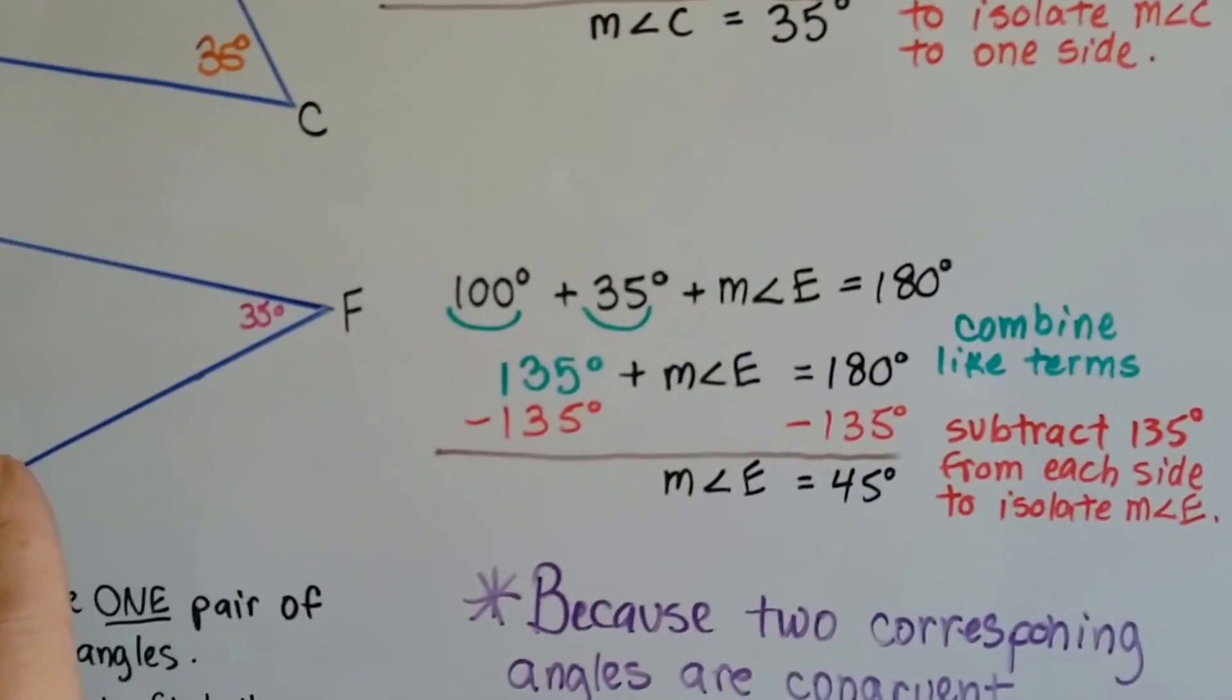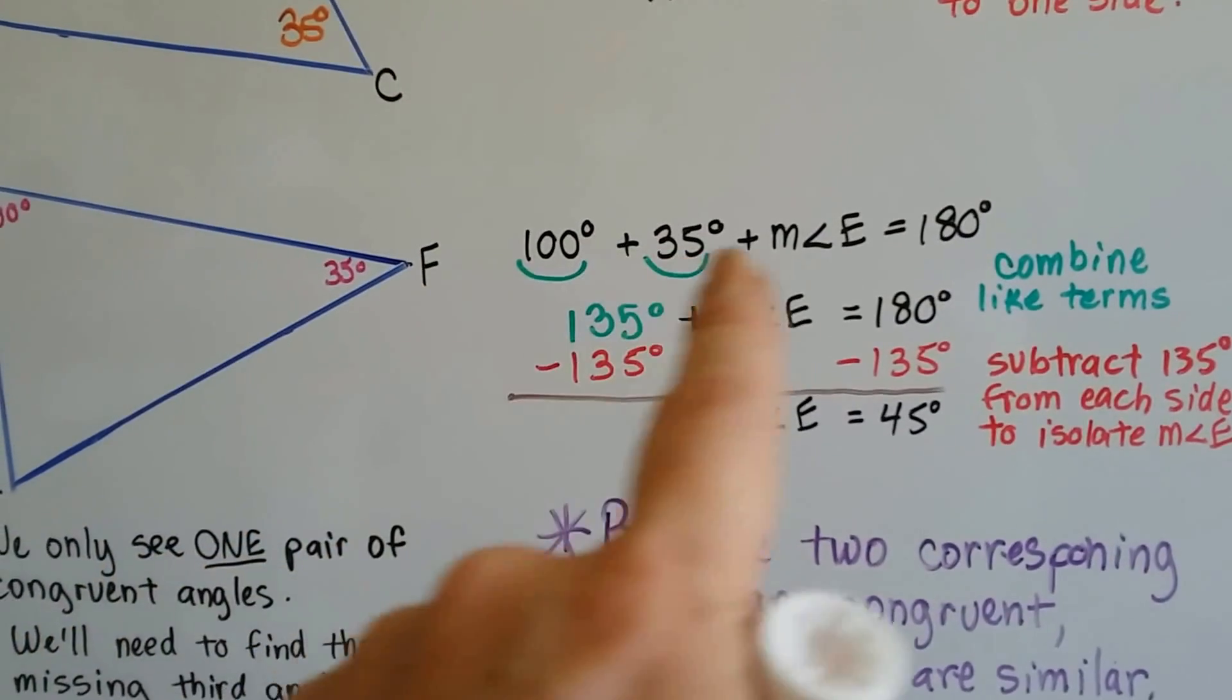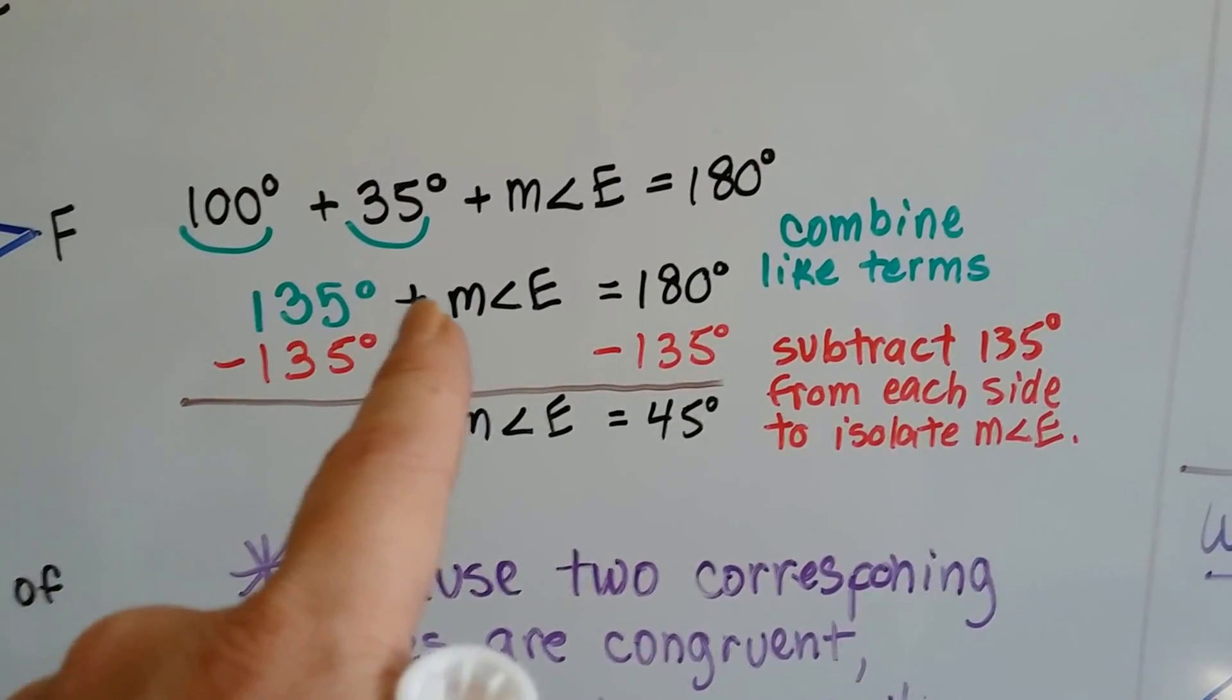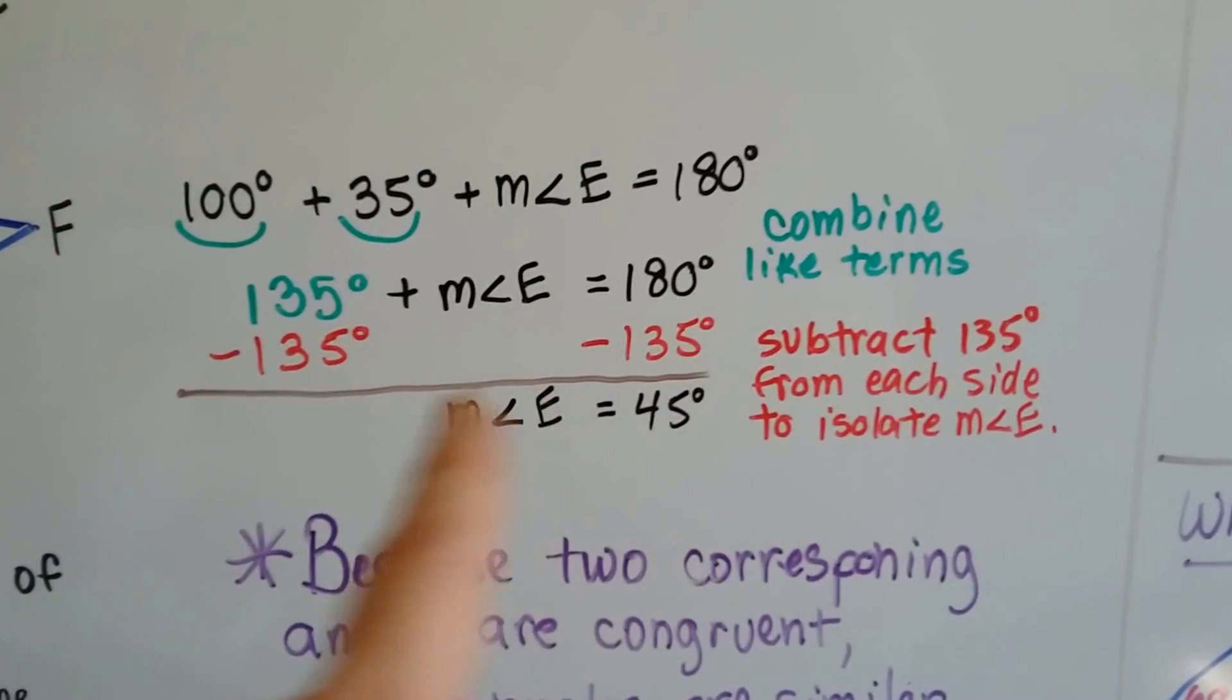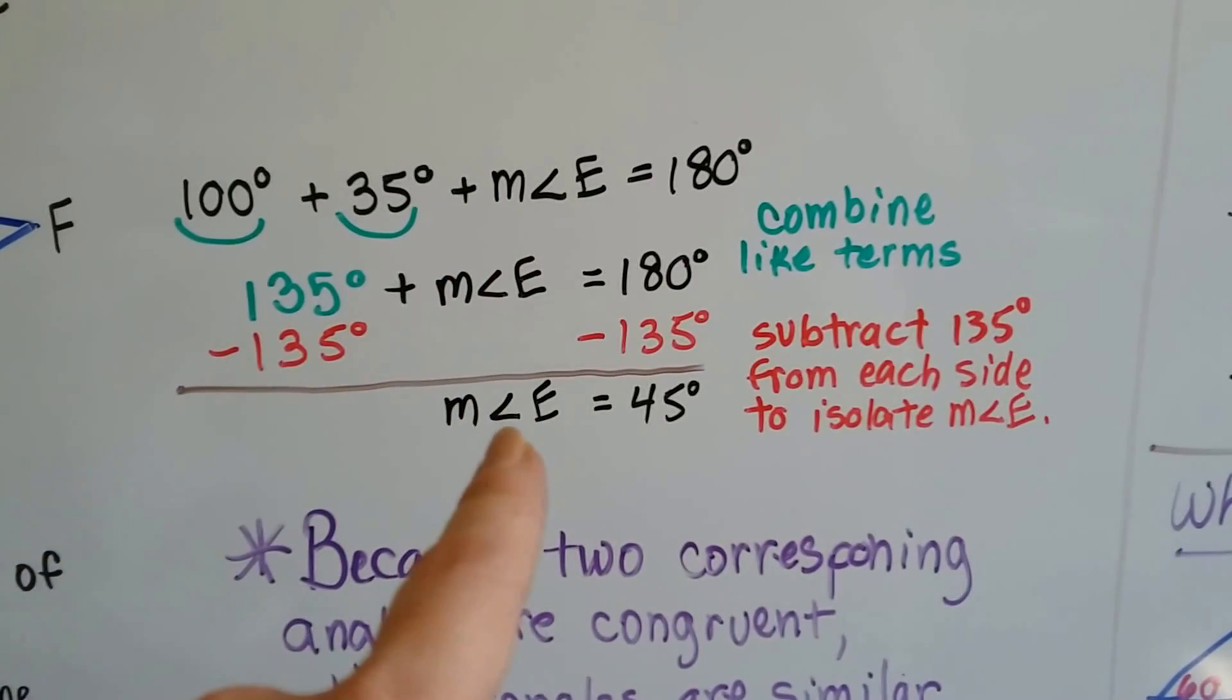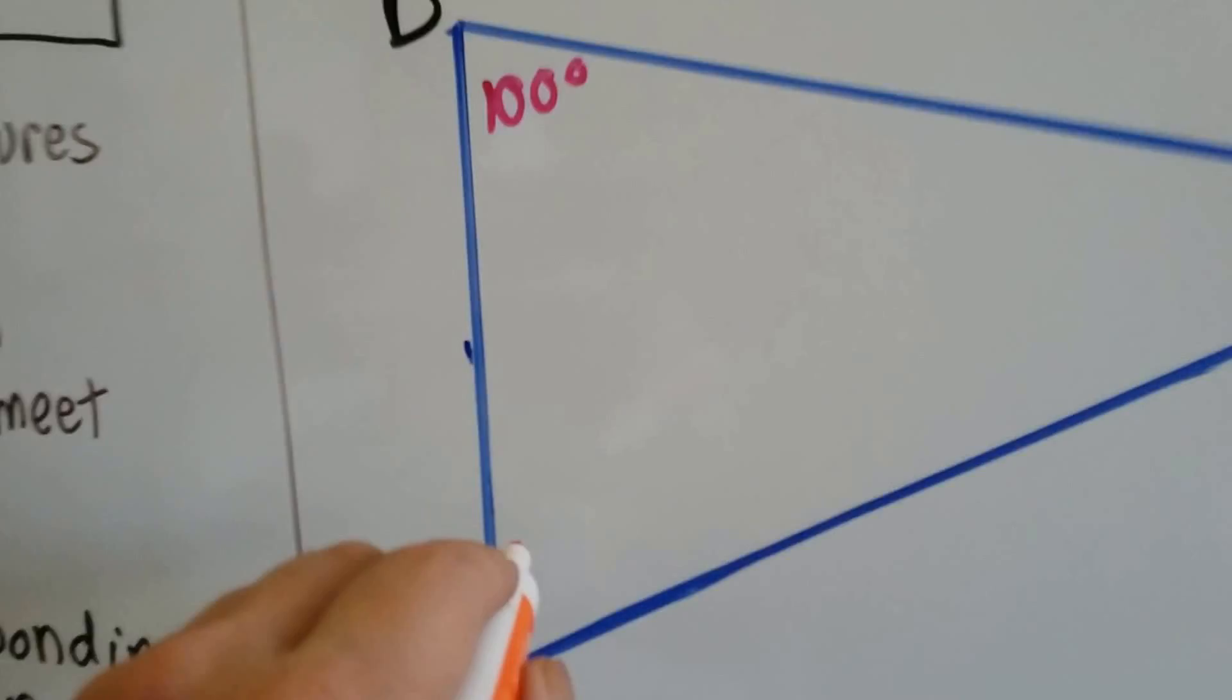Now we need to do it for the second one. 100 degrees, measure of angle D, and 35 degrees, and the measure of angle E are going to equal 180 degrees. We combine the like terms and get 135 degrees plus the measure of angle E equals 180 degrees. We subtract 135 degrees from each side. The measure of angle E is isolated to one side. 180 degrees minus 135 degrees is 45 degrees.